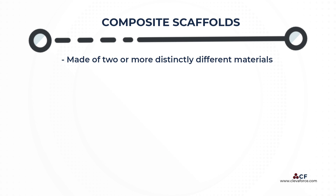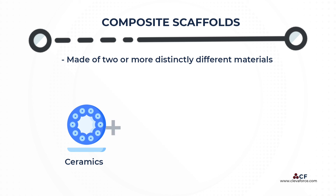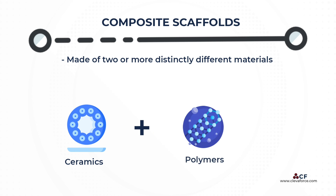Lastly, composites are also used to build scaffolds. They are made of two or more distinctly different materials. Ceramics combined with polymers, for instance, are developed to take advantage of both materials' properties to meet mechanical and physiological requirements.